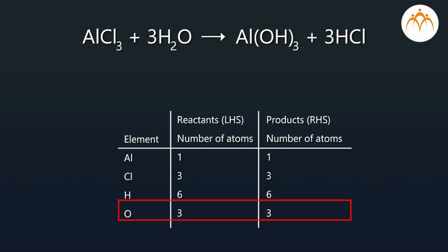Check if the equation is balanced or not. Now all elements are equal on both sides. It means that this equation is now a balanced chemical equation. Step 4: